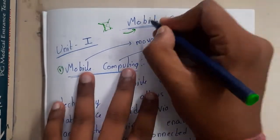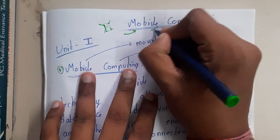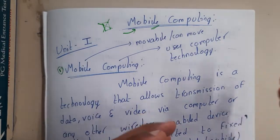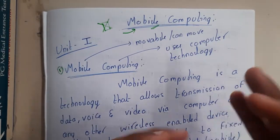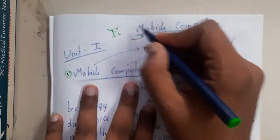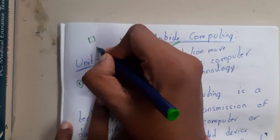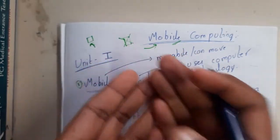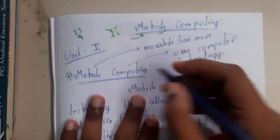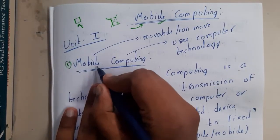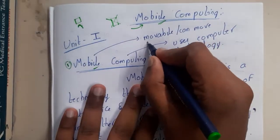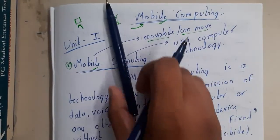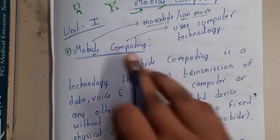The meaning of 'mobile' in the name of this subject — and the whole concept of the subject — is movement. Basically, you can move the device. It is nothing but a movable device. So mobile means movable, or something that can move.